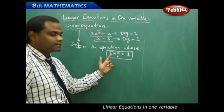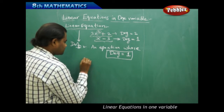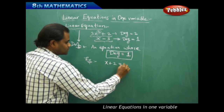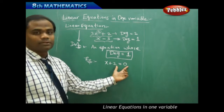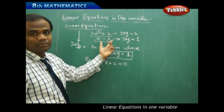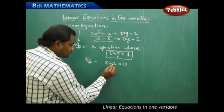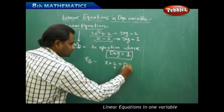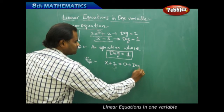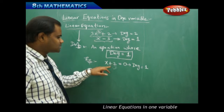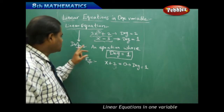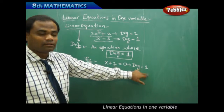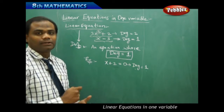An equation where the degree is 1 is called a linear equation. For example, x + 2 = 0 is an equation because we equate both sides, whereas x + 2 without the equals sign is merely an expression. For this algebraic equation x + 2 = 0, the degree is 1, so it is called a linear equation according to the definition that degree must be 1.